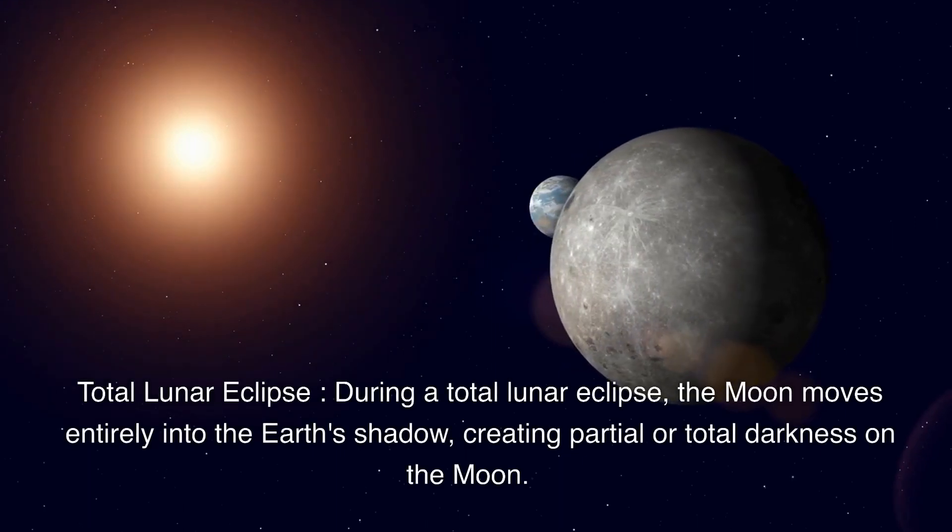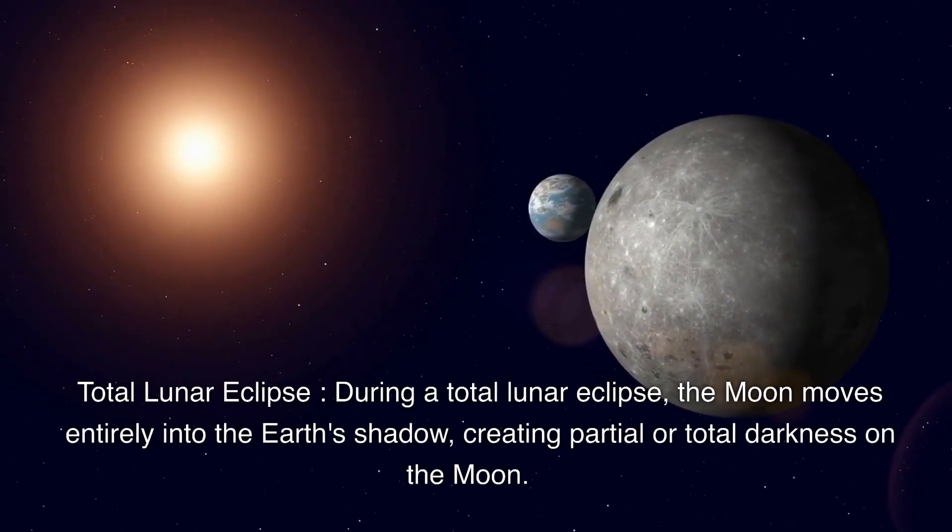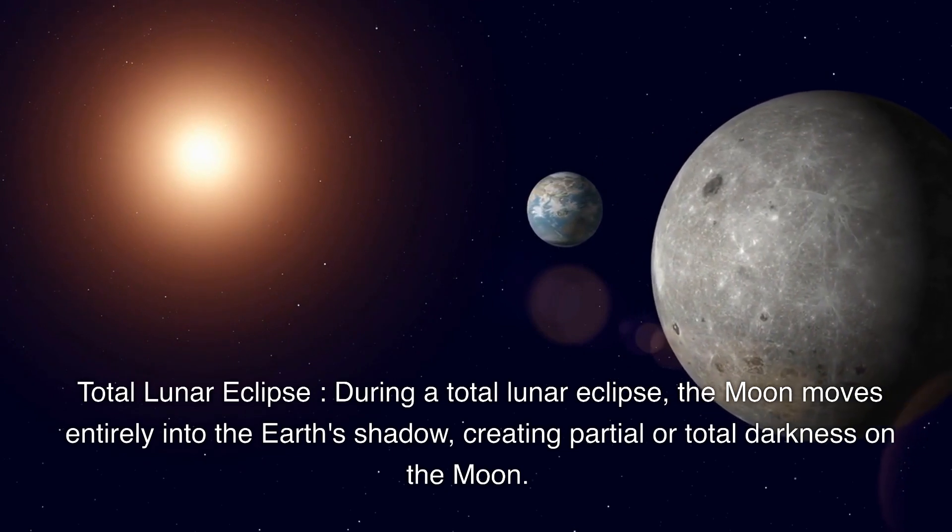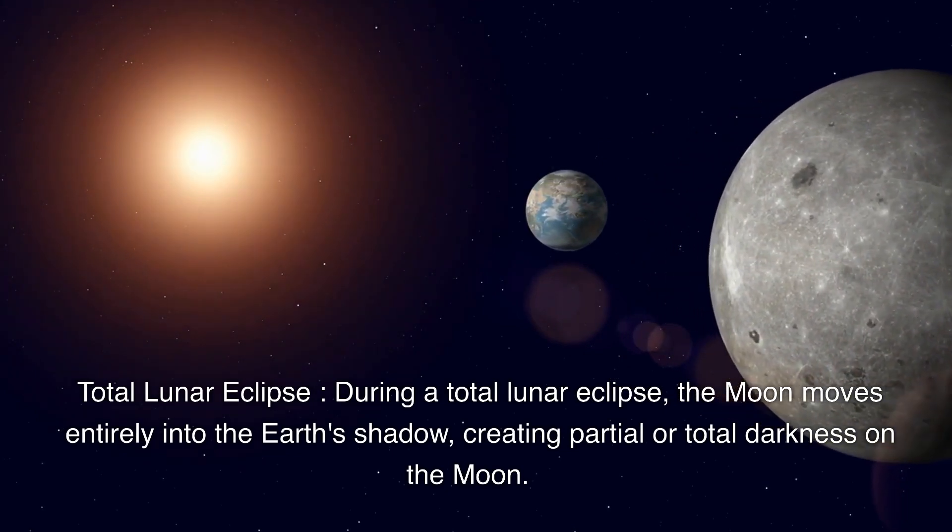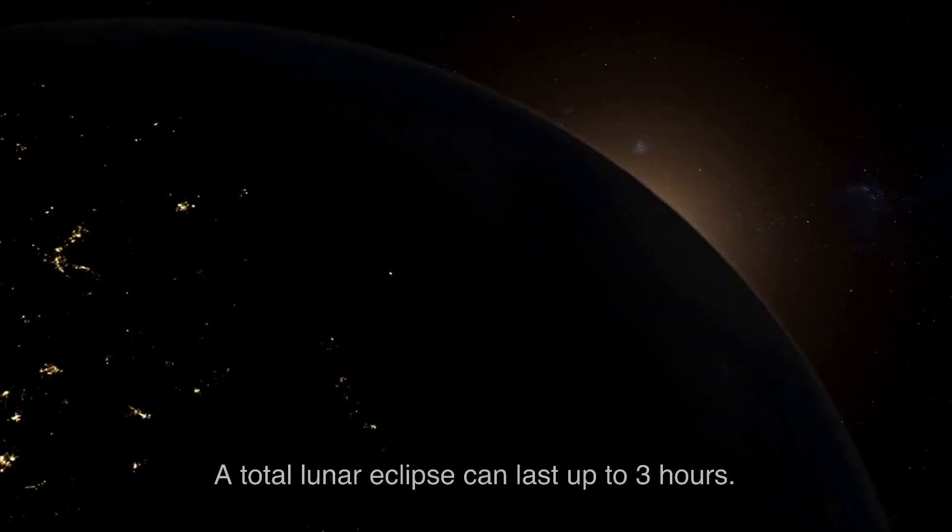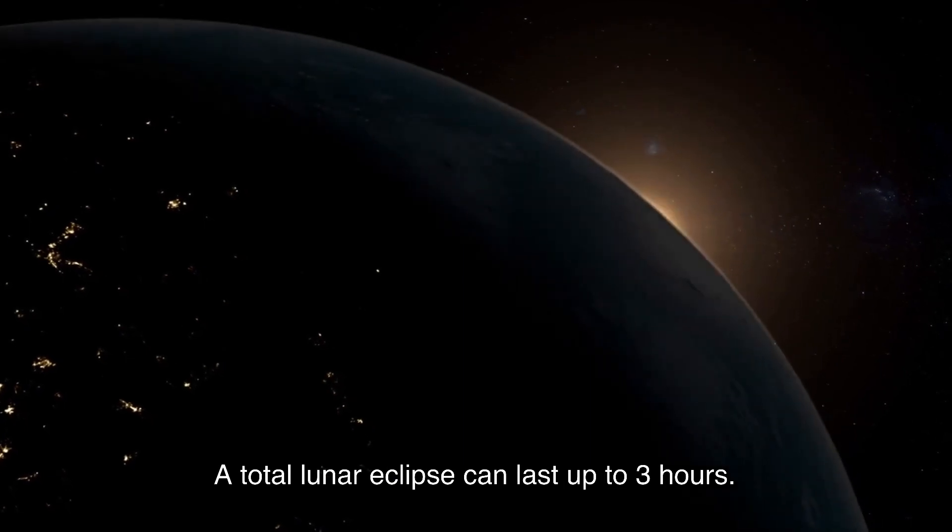Total lunar eclipse. During a total lunar eclipse, the moon moves entirely into the earth's shadow, creating partial or total darkness on the moon. A total lunar eclipse can last up to three hours.